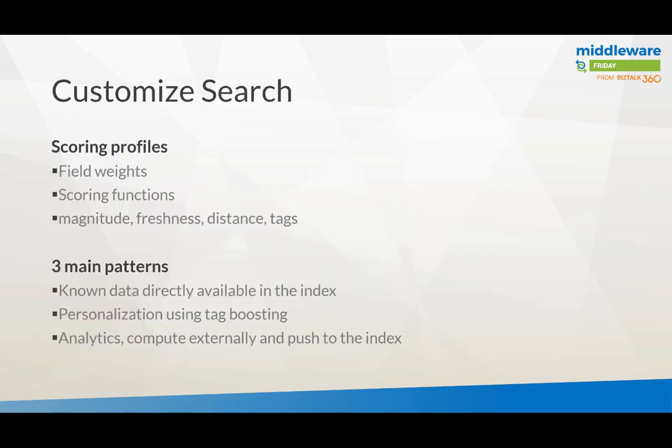You can also customize the search further. When you get more into customizability, you can create scoring profiles where you can apply certain weights on fields, you can do scoring, you can do things around distances — that type of stuff. There are three main patterns: you can query your data directly from the available index, you can do personalization using tag boosting, and you can do some analytics on top of your search, compute it, and push that back to the index to make it even better.